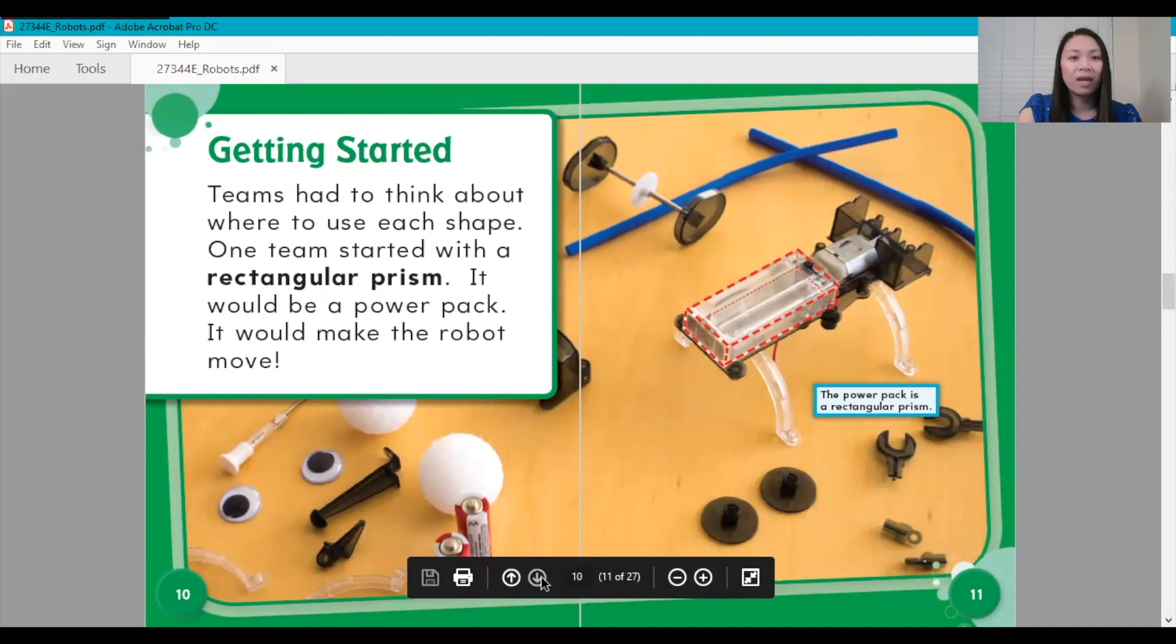Getting Started. Teams had to think about where to use each shape. One team started with a rectangular prism. It would be a power pack. It would make the robot move. The power pack is a rectangular prism, as you can see here.